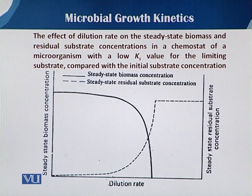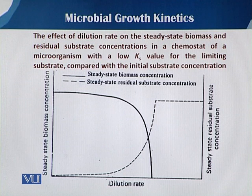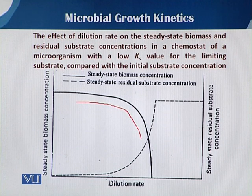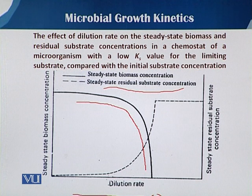Looking at how continuous culture changes with respect to previous equations: the effect of dilution rate on steady state and residual substrate concentration in chemostat is shown for a microorganism with low Ks value for the limiting substrate. A dark line represents steady state biomass concentration showing how it changes, while the dotted line shows residual substrate. As dilution rate increases, there is a gradual increase in steady state residual substrate concentration, up to a certain maximum level.